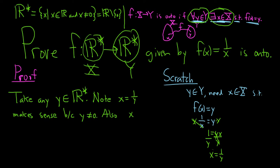Also, x equals 1 over y is not equal to zero. If you're not convinced, you could prove it's not zero by contradiction. If it was zero, then you get 1 over y equals zero. Then you multiply by y, and you get 1 equals zero, and that's a contradiction. So it's not zero. So this means that it's in R star.